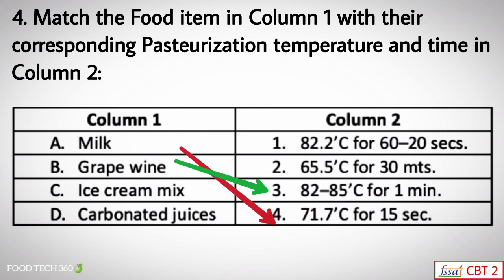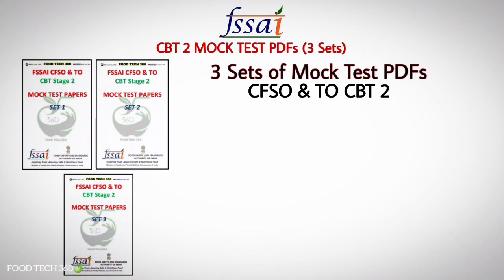Pasteurization temperature and time for grapevine is 82 to 85°C for one minute. For ice cream mix it is 82.2°C for 20 to 60 seconds. And for carbonated juices it is 65.5°C for 30 minutes.